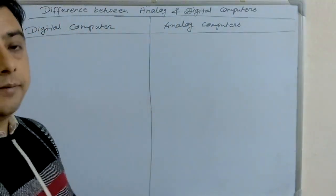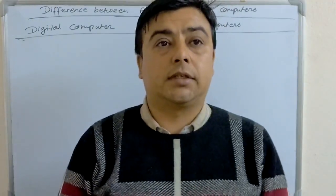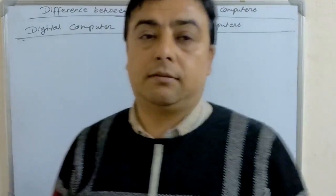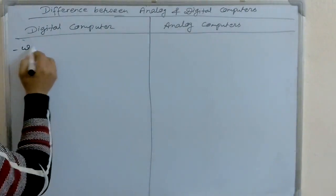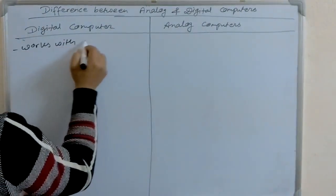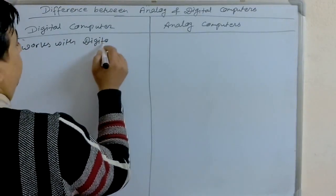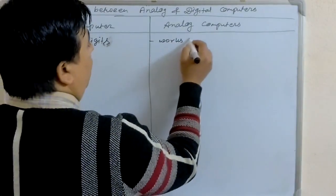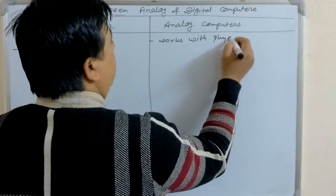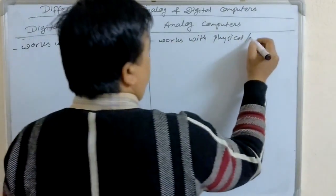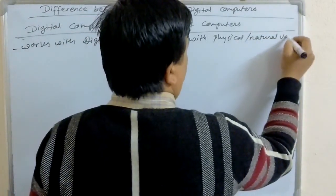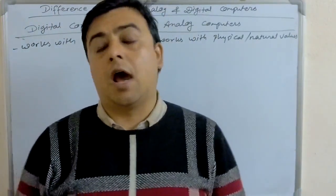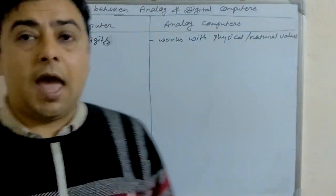As the first point, digital computers are those computers that work with digital values. And analog computers work with physical or natural values. Those computers that work with natural or physical values are known as analog computers.